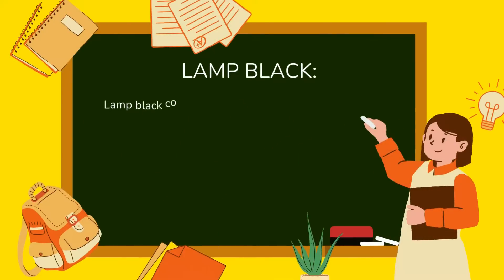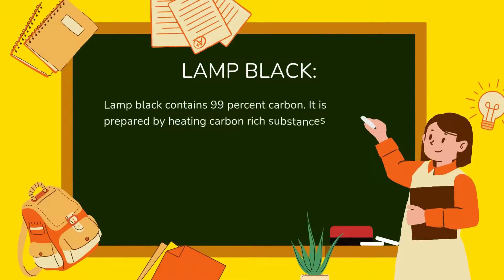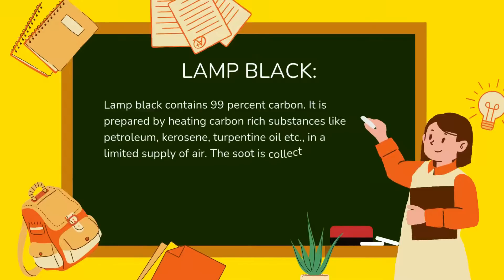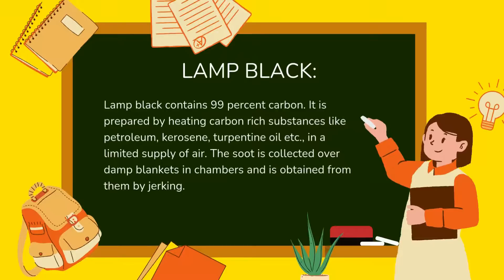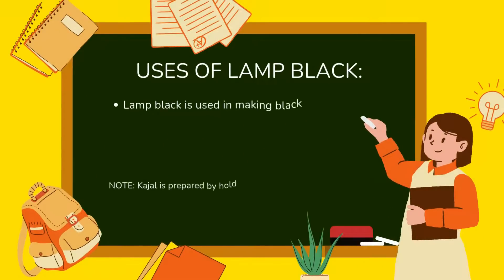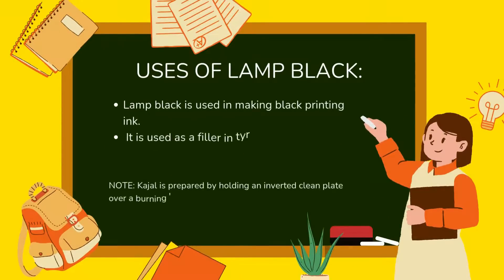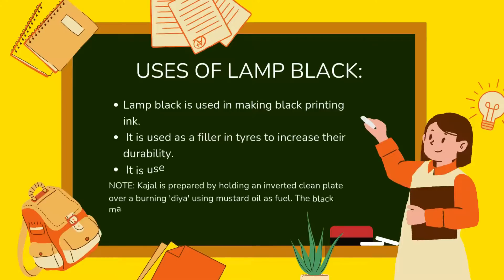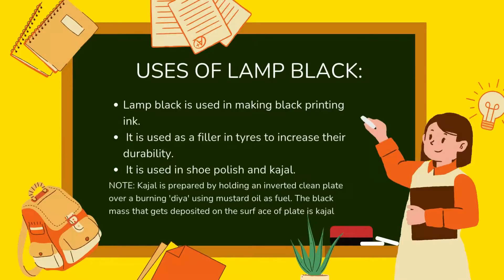Lamp black contains 99% carbon. It is prepared by heating carbon-rich substances like petroleum, kerosene, and turpentine oil in a limited supply of air; soot is collected over damp blankets in chambers and obtained by jerking. Uses of lamp black: it is used in making black printing ink, as a filler in tires to increase durability, and in shoe polish and kajal. Note: kajal is prepared by holding an inverted clean plate over a burning diya using mustard oil as fuel; the black mass deposited on the plate is kajal.